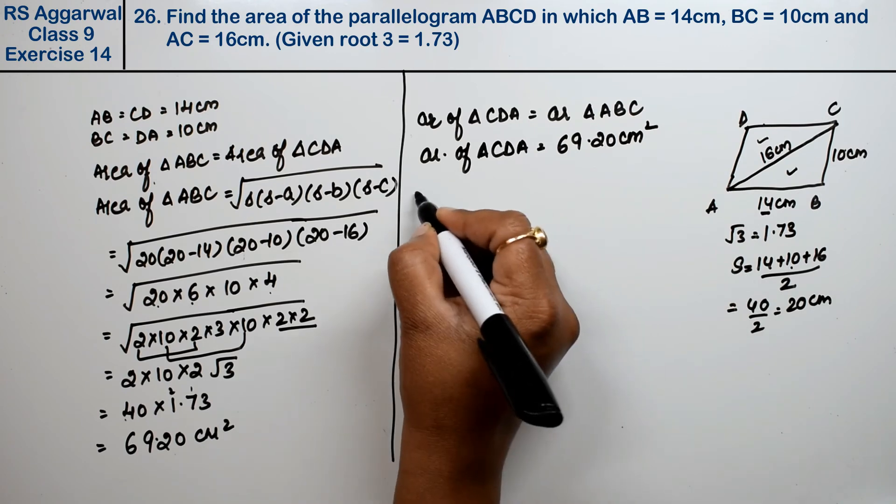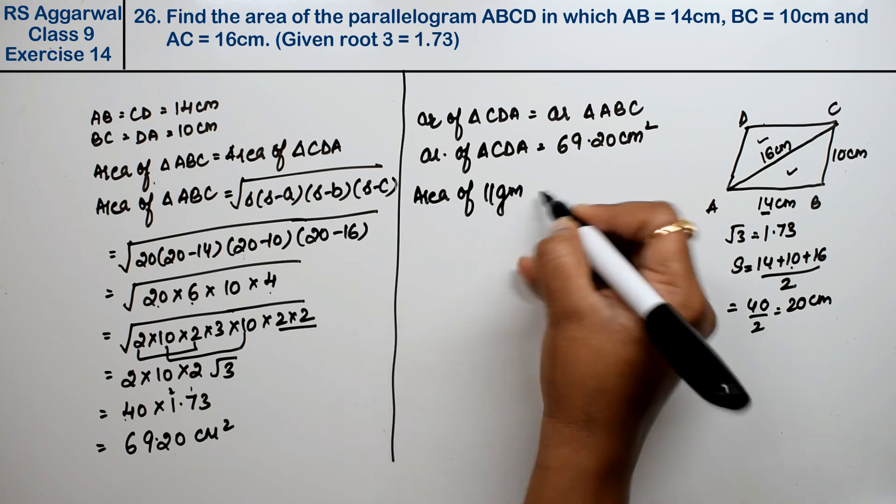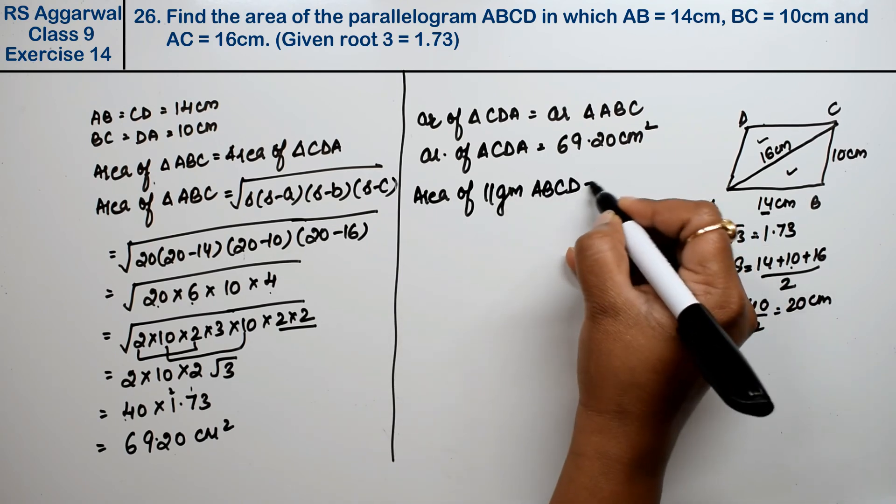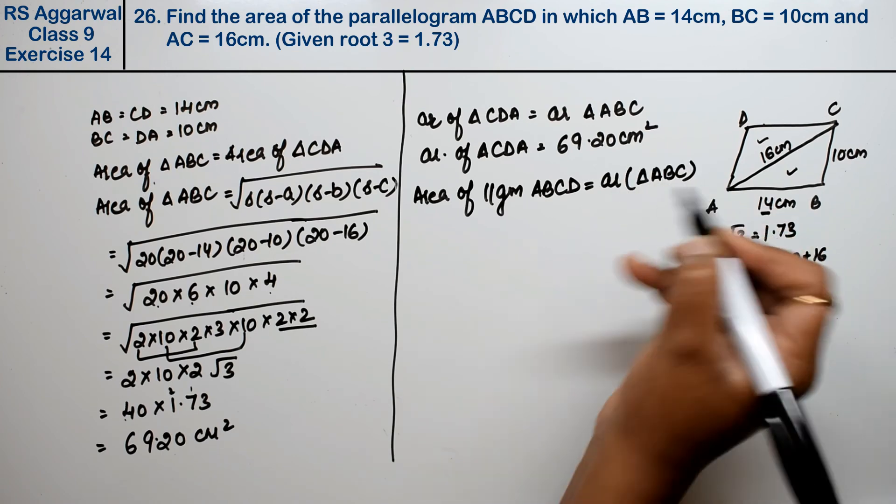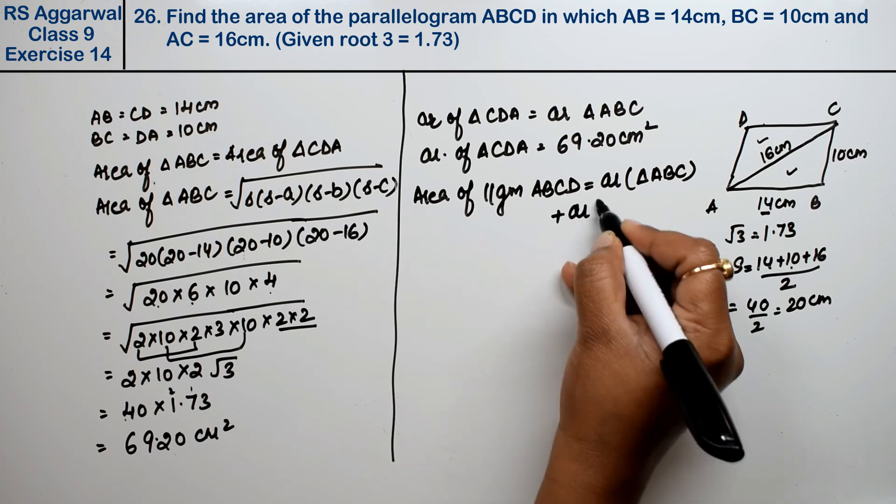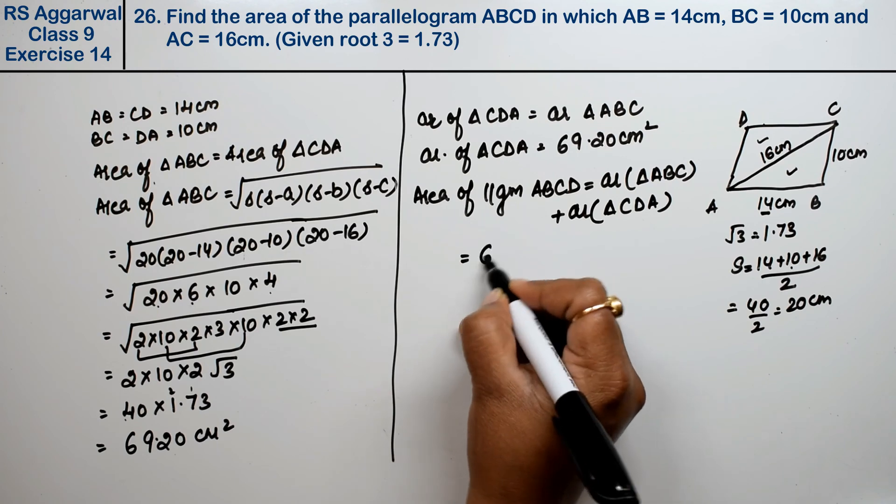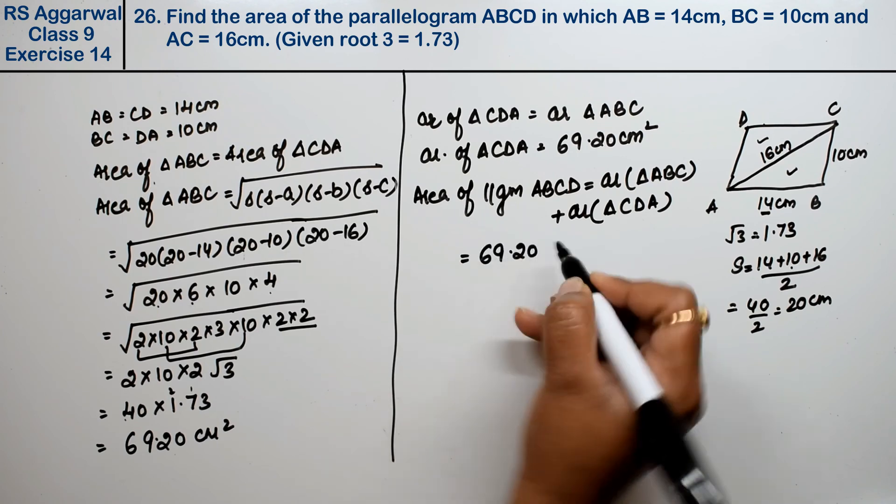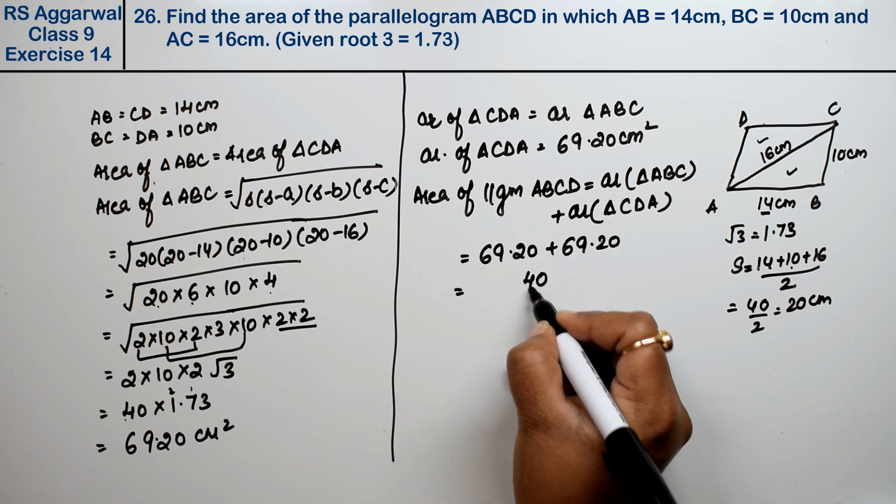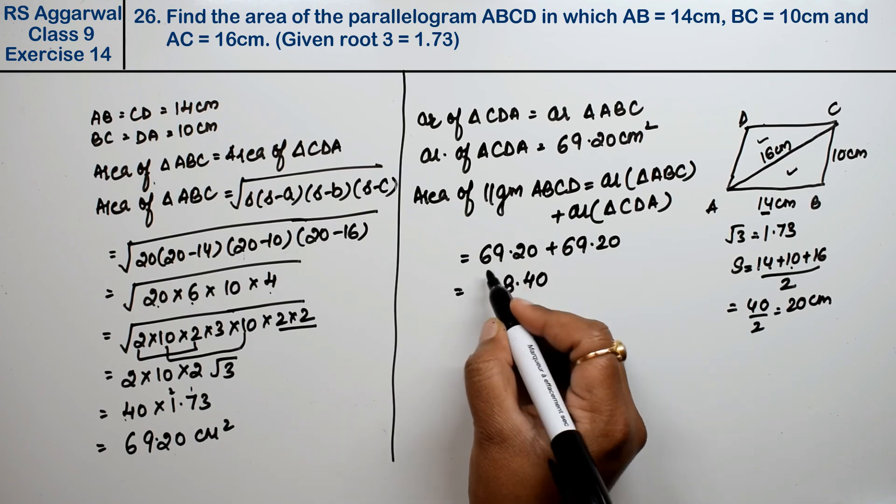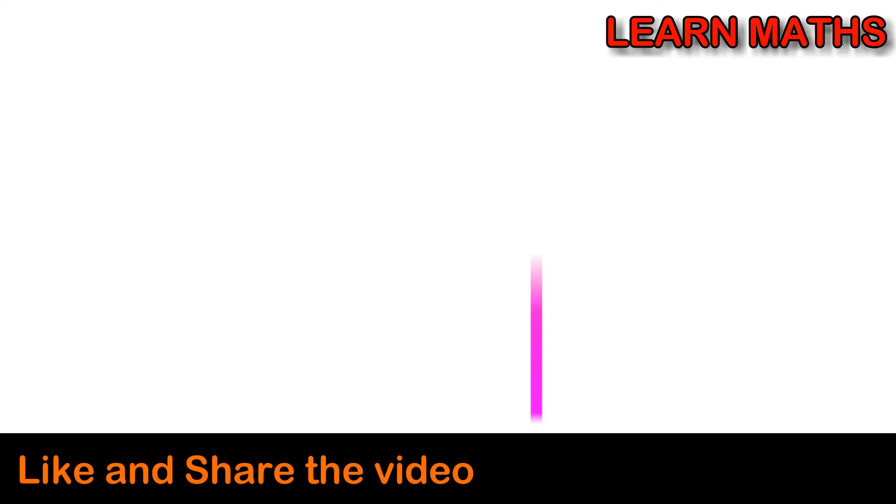Now how will we find the area of parallelogram ABCD? We add area of triangle ABC plus area of triangle CDA. This is 69.20 plus 69.20. Adding both, 9 plus 9 is 18 carry 1, 12 and 13, which equals 138.40 cm squared. This is the answer.